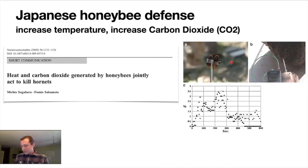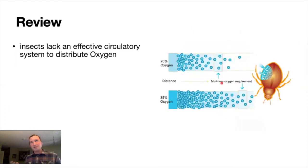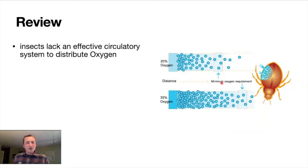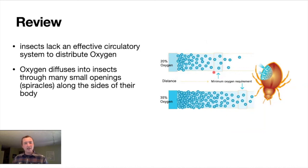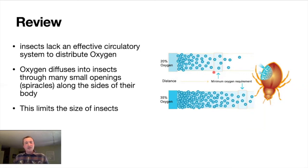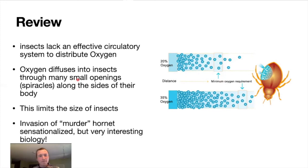Please don't kill any native pollinators due to mistaken identity with this invasive hornet — it has just entered the United States and you're very unlikely to encounter it. To review: insects lack an effective circulatory system to distribute oxygen. They have a different strategy than vertebrates, dependent on diffusion through spiracles, and oxygen can only diffuse so far into the insect, which limits insect size. The invasion of the murder hornet is somewhat sensationalized in the media, but there are really interesting physiological principles underlying the defense mechanism that Japanese honeybees use against it.